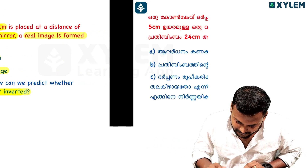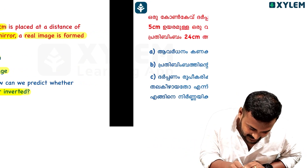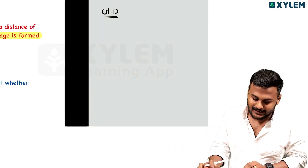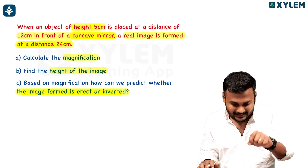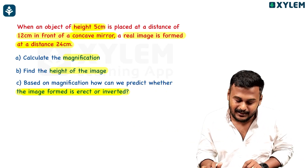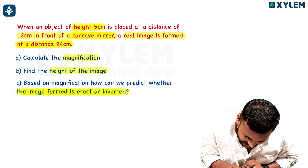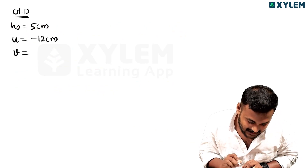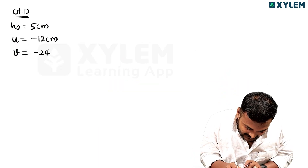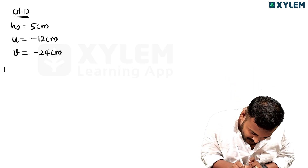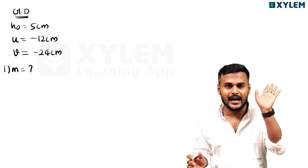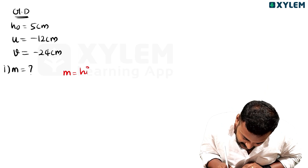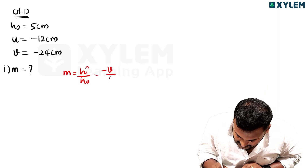First of all, given data: height of the object ho equals 5 cm; object distance U equals minus 13 cm; V is a real image at 24 cm, so minus 24 cm. We have to find magnification. M is given by the formula: M equal to hi by h-naught, which equals minus V by U.